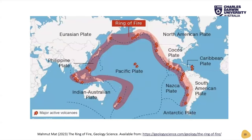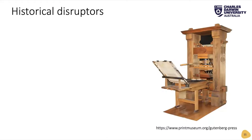Where I am, sitting down here in Australia, is just near the ring of fire. Since I've been up in Darwin for the last two and a half years, I've probably felt about four or five earth tremors as these plates have moved along this ring of fire. But disruption itself is not new, is it? We've had historical disruptions forever.